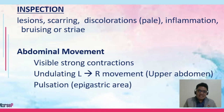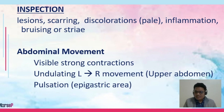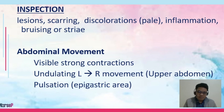Striae may signal a rapid stretching of the abdomen and a rapid change in the size of the abdomen. We also watch out for abdominal movement — visible strong contractions. The contractions may be undulating from the left to the right, meaning there are fine movements from the left to the right side of the abdomen, especially in the upper abdomen.